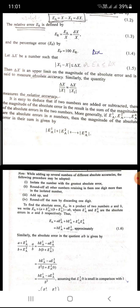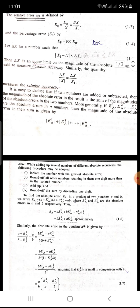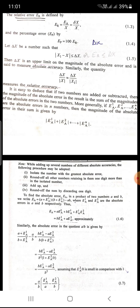It is easy to deduce that if two numbers are added or subtracted, then the magnitude of the absolute error in the result is the sum of the magnitudes of the absolute errors in two numbers. More generally, if e1a, e2a, and ena are the absolute errors of n numbers, then the magnitude of the absolute error in that sum is given by e1a plus e2a and so on up till ena.